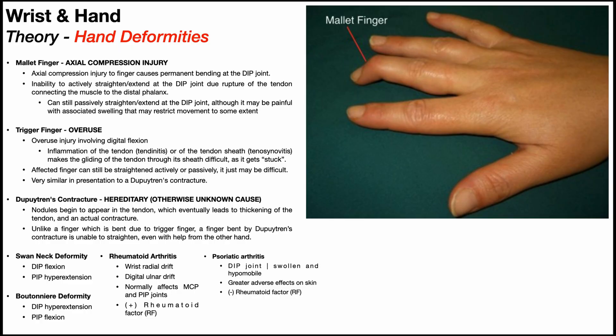In this video, we're going to be covering the basics of some common hand deformities that you'll encounter in your courses and also when you're studying for the board exam. The first hand deformity is called mallet finger, specifically affecting the DIP joint of the third digit. Mallet finger is an acute injury caused by axial compression — normally to the longest finger.